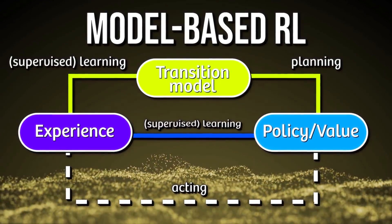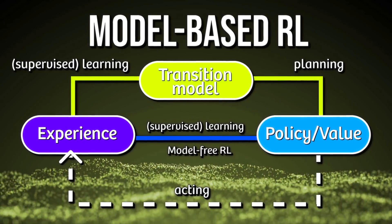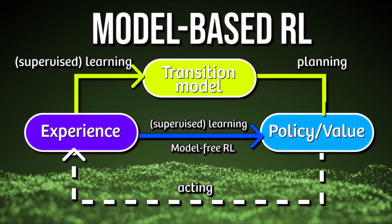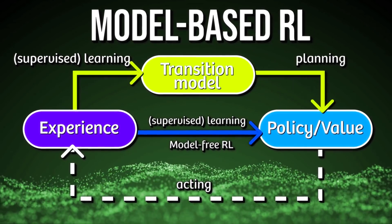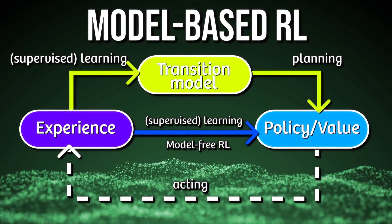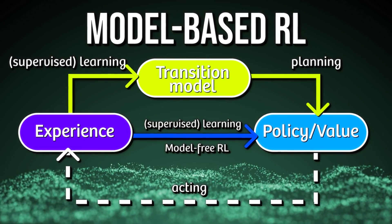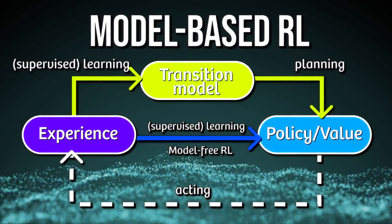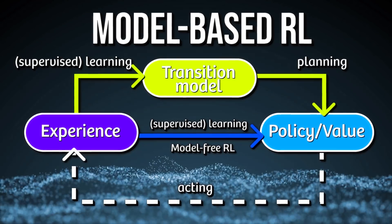Both algorithms have trade-offs. The model-free system is fast — we just perform a table lookup — but it's inflexible. If the reward function changes, all the values in the lookup table have to change. Whereas in the model-based learning system, it's more flexible: if the reward at some state changes, we just change the reward function at that state, and that reward will propagate to all of our values via the reward function we've defined. But it's slower.